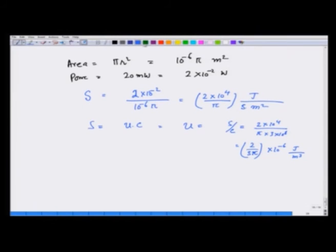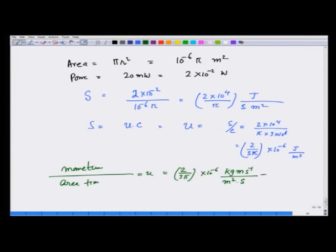How much is the momentum carried? Momentum across the surface per unit area per unit time is u, which is 2 over 3 pi times 10^-6. Now I can write it as momentum per unit area per unit time, and this is the momentum transfer, and this is therefore the pressure, which comes out to be 0.67 over 3, roughly 0.22 or 2.2 times 10^-7 Newtons per meter squared. That is the answer.